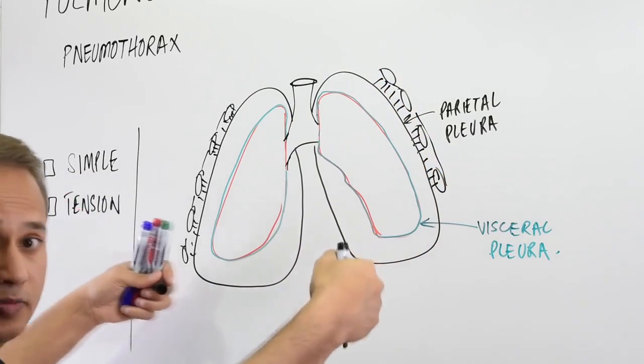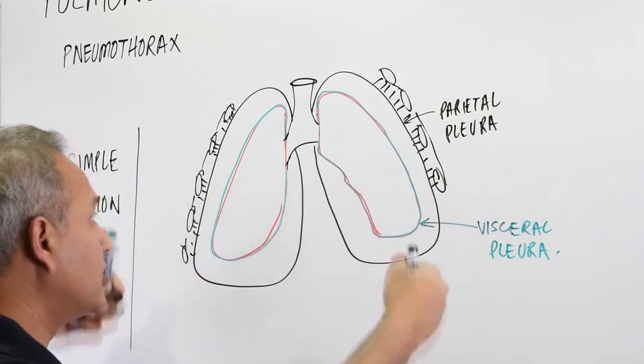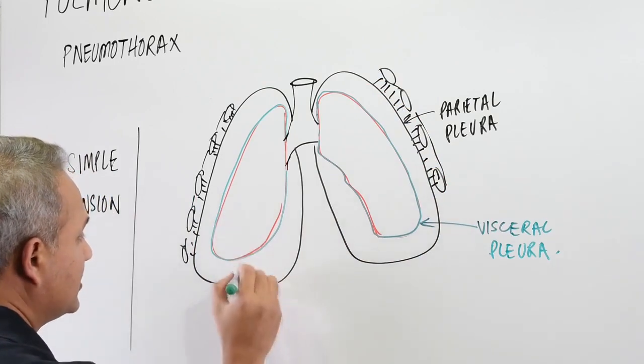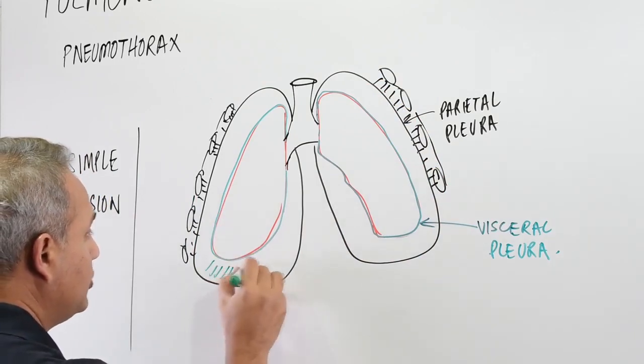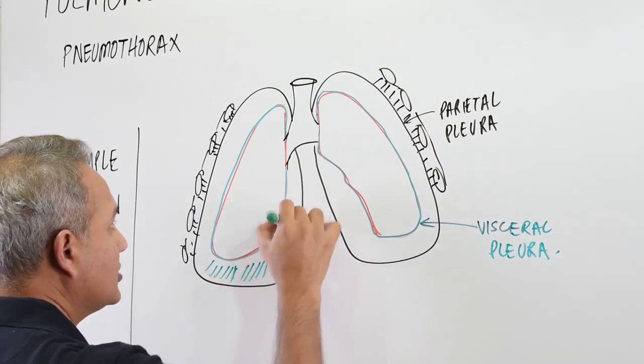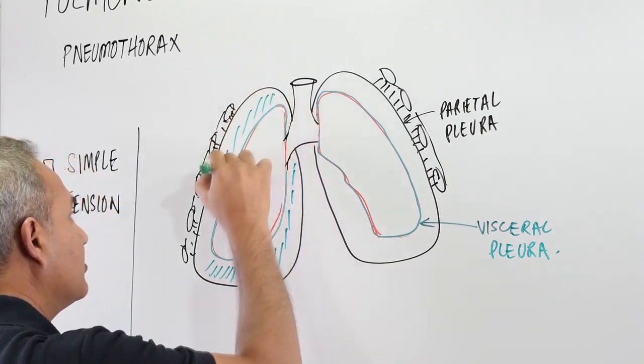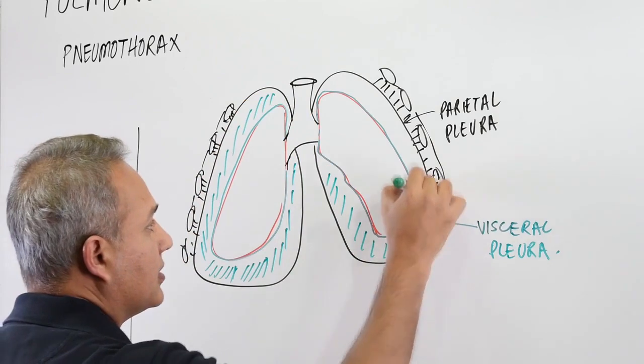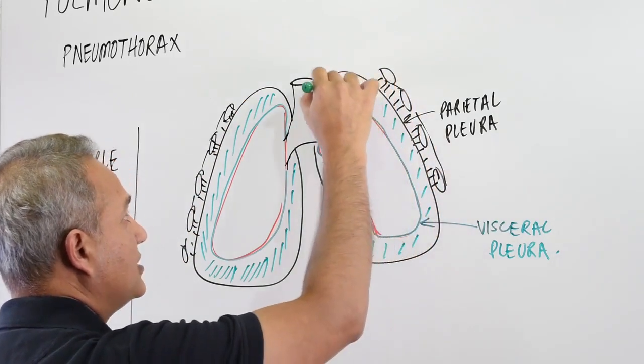...keeps the parietal pleura moved, you know, pulled outwards so that the cavity between the visceral and parietal pleura is the pleural cavity. So today's story, today's problem, today's topic is about this cavity.